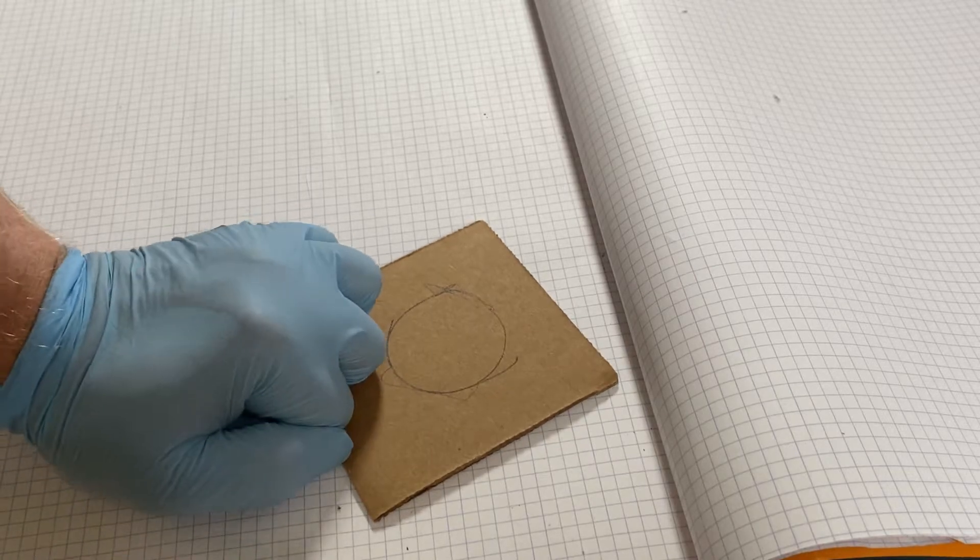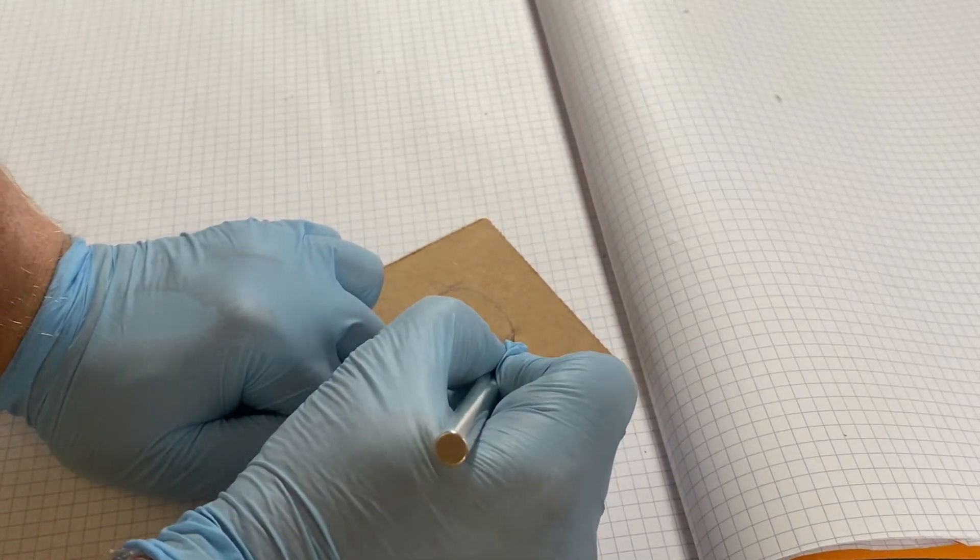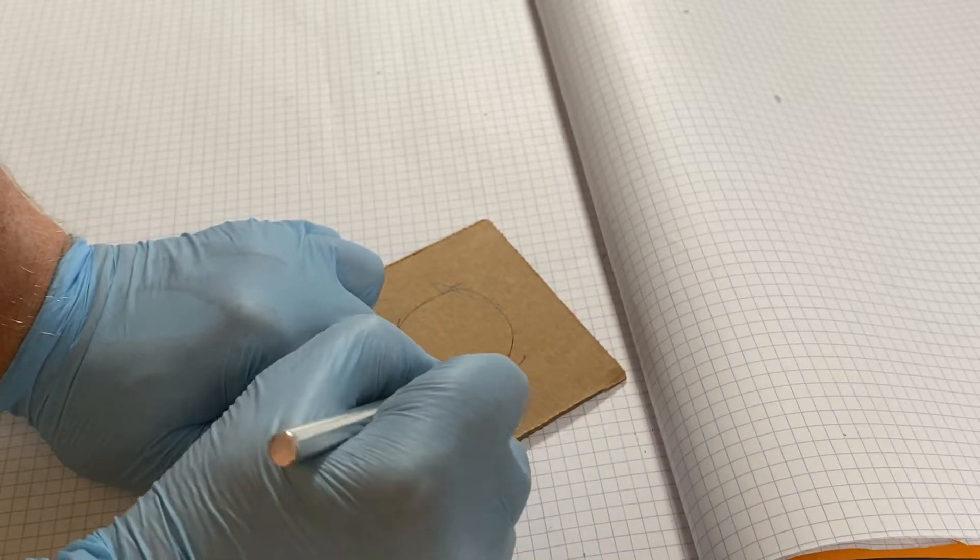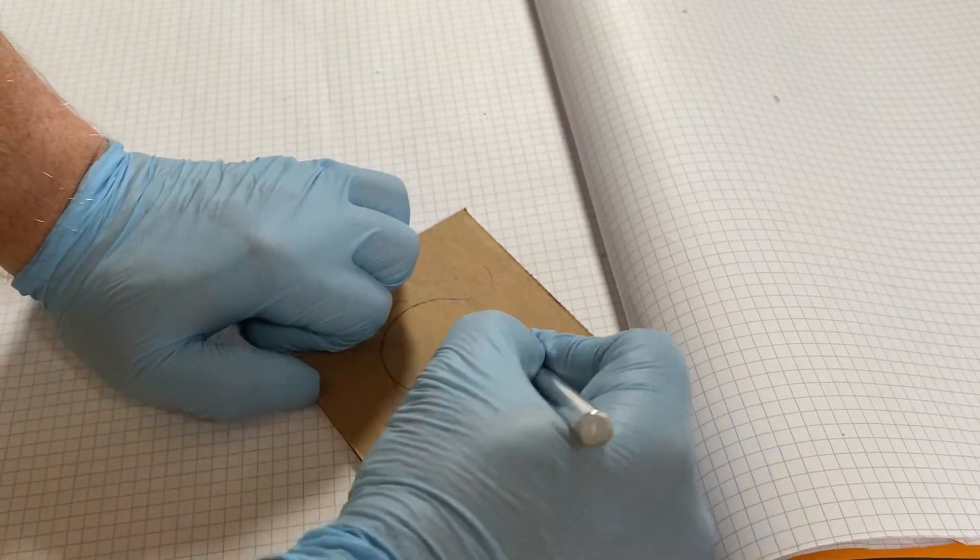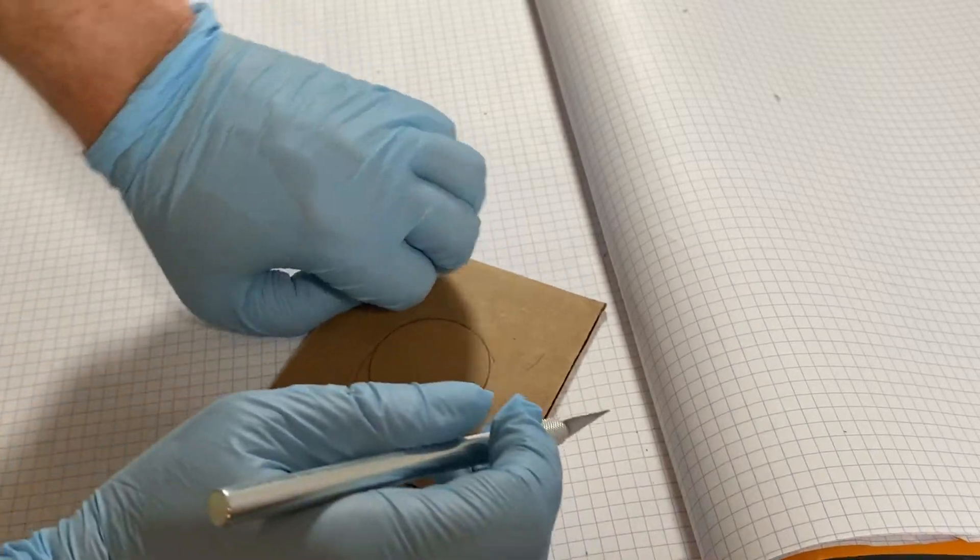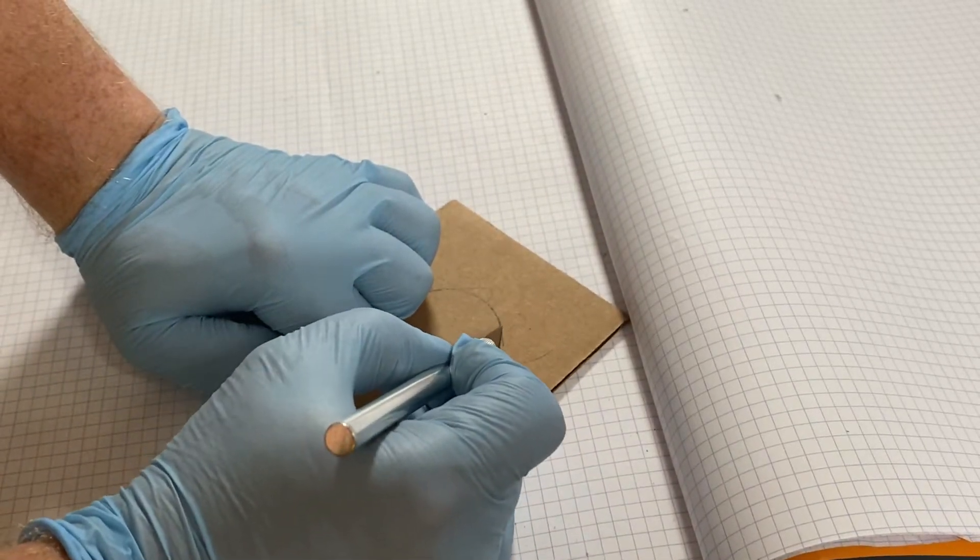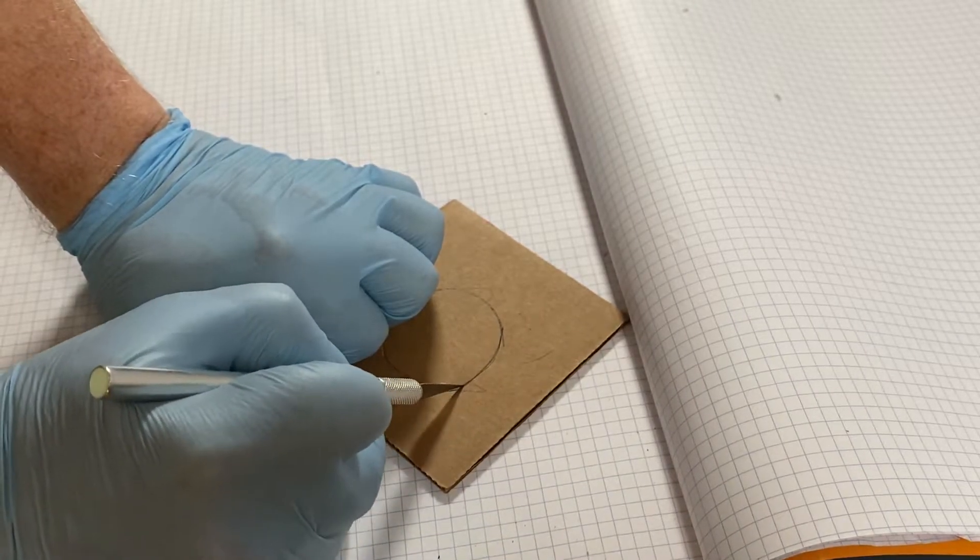Hold this down again with my knuckles, and I'm just going to gently cut along the line. Turn it around. Keep cutting. You don't have to put really any pressure at all, just enough to punch through that top layer. Keep following that line.